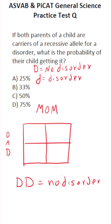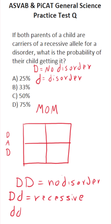If someone has the genotype capital D, lowercase d, that means they're a recessive carrier of the disorder. They don't have the disorder themselves, but they have the genes that can possibly cause someone to have that disorder. And if someone has the genotype lowercase d, lowercase d, that means they have the disorder.